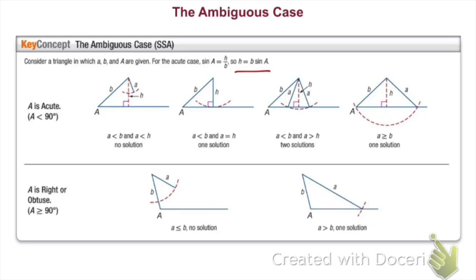If angle A is acute (less than 90 degrees): if A is less than B and A is less than H, we have no solution. If A is less than B and A equals H, we have one solution — a right triangle. If A is less than B and A is greater than H, we can make two triangles. If A is greater than or equal to B, we have one solution. If angle A is obtuse (greater than or equal to 90 degrees): if A is less than B, no solution; if A is greater than B, one solution.